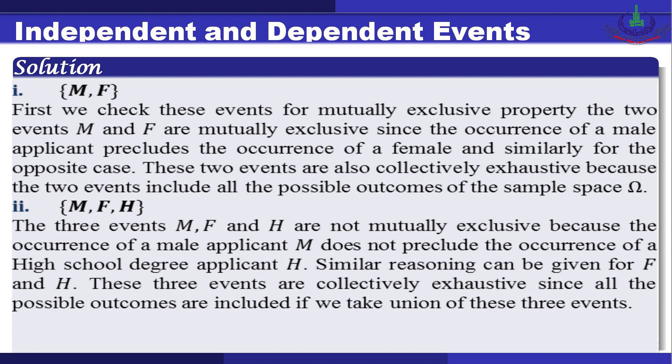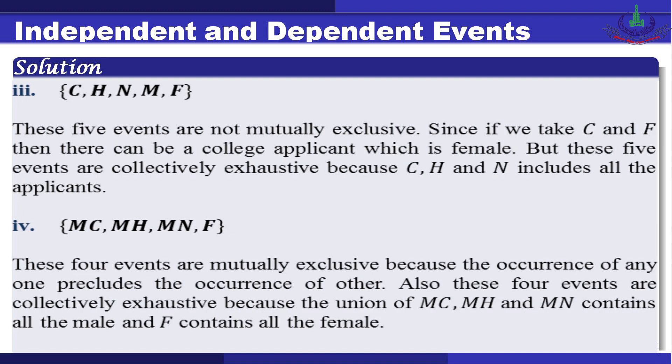For the second set {M, F, H}: these three events are not mutually exclusive because the occurrence of a male applicant does not preclude the occurrence of a high school degree applicant H. However, they are collectively exhaustive since all possible outcomes are covered. For the set {C, H, N, M, F}: these five events are not mutually exclusive since C and F can overlap (a female with a college degree), but they are collectively exhaustive.